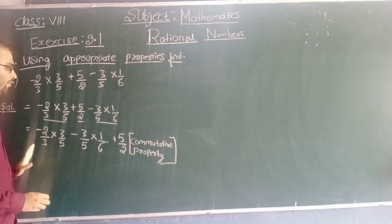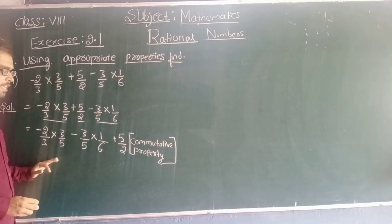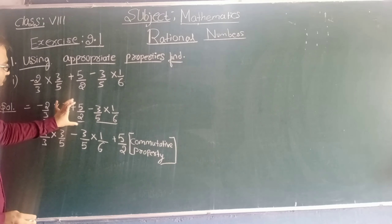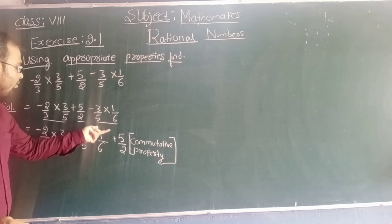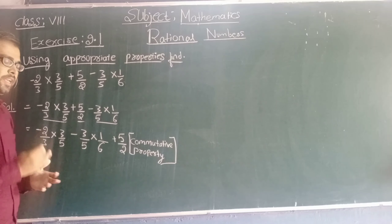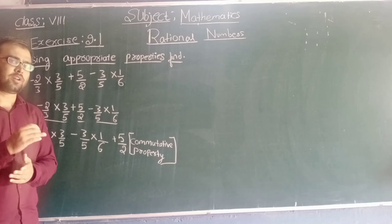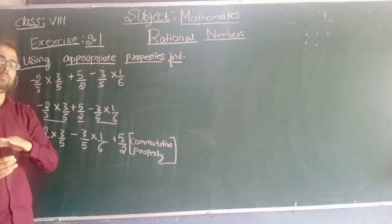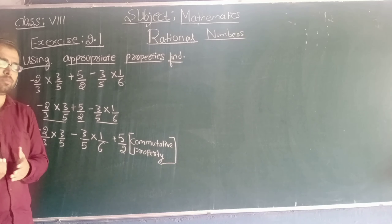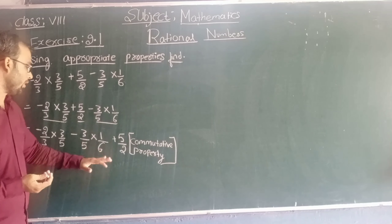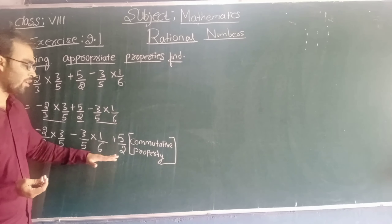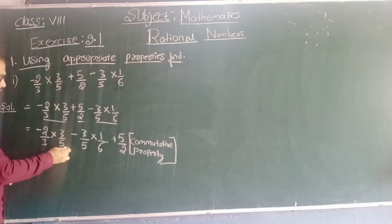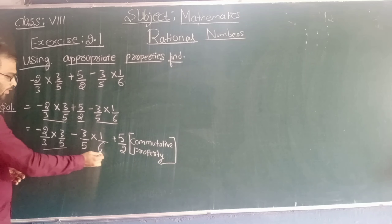If we add A plus B or B plus A, the result will be the same. So in this step we have used commutative property. Now look at here — these terms or expressions have 3 by 5 as common.